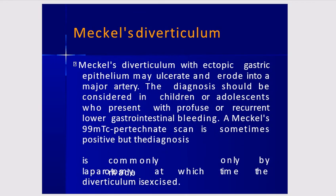Meckel's diverticulum is ectopic gastric epithelium that may cause bleeding and perforation. It should be considered in children or adolescents presenting with profuse or recurrent lower GI bleeding. A technetium-99m scan is sometimes positive, but the diagnosis is commonly confirmed only at laparotomy, at which time the diverticulum is excised.